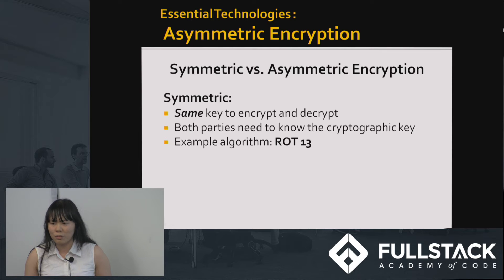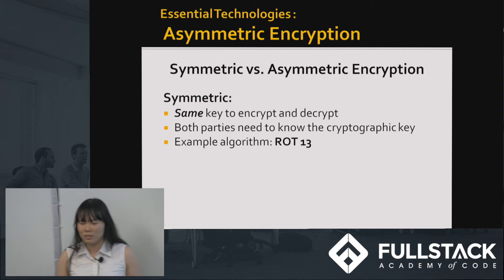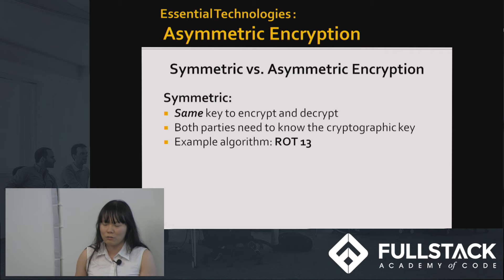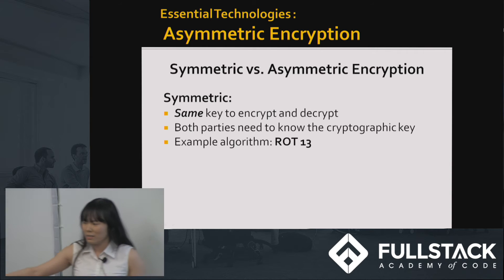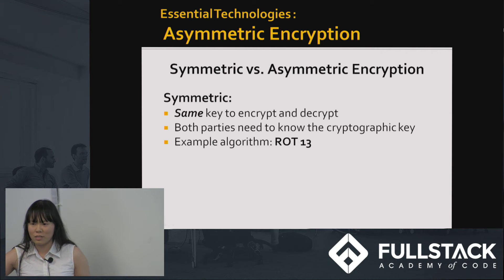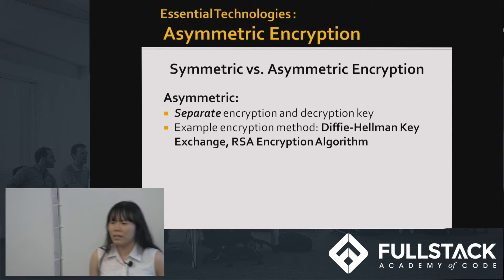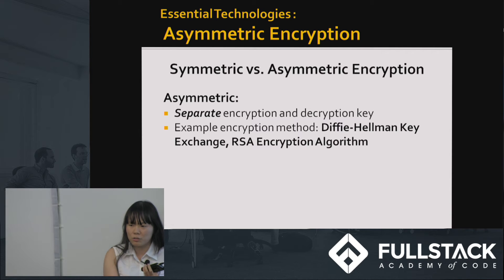An example algorithm is ROT13, where if I want to transmit A, B, C, D, E — ROT13 will shift by 13 letters and my message becomes N, O, P, Q, R, and then backwards for decryption, just back to A, B, C, D, E. You would need to tell the other party 'I'm shifting by 13 letters.' Asymmetric encryption, on the other hand, uses a separate key for encryption and a separate key for decryption.